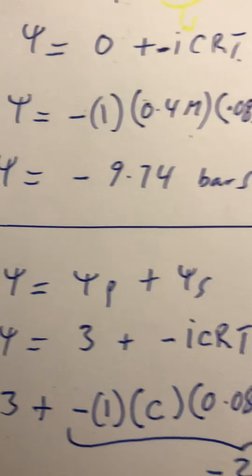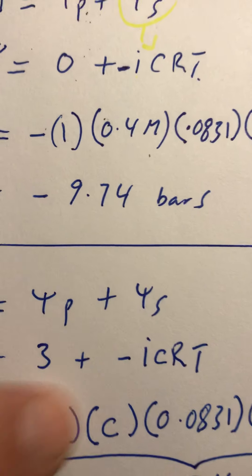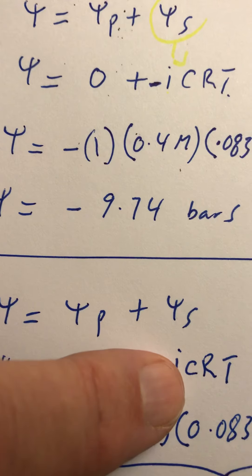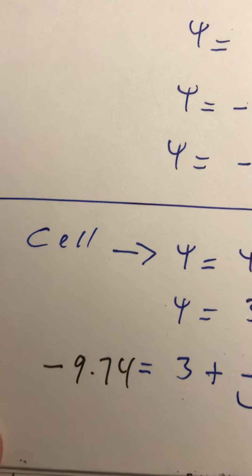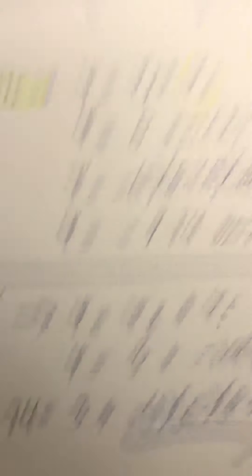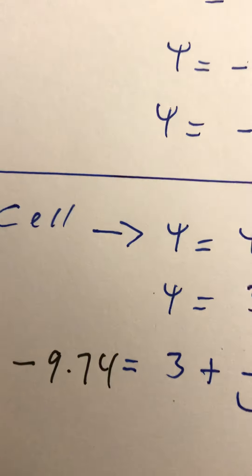Psi equals, we're given psi P is three, so psi equals three plus negative iCRT, because psi S is negative iCRT. I'm just substituting that. I put in my value for psi which I figured out, so negative 9.74 equals three plus iCRT.